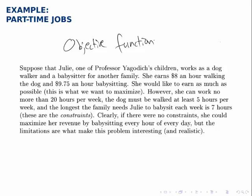Reading through this, we're explicitly told that what we want to maximize is earnings — how much Julie earns. Usually though it's not stated quite so explicitly, so we need to read through the problem carefully to find what we're trying to maximize or minimize. Secondly, we need to look for the constraints. So these are the two main parts of a linear programming problem statement: the objective function and its description, and then the constraints.